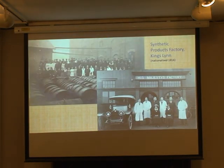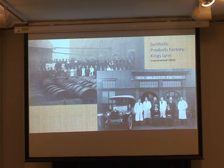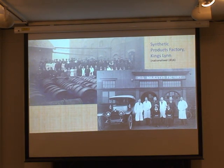Even more significantly, the government took over the Synthetic Products Factory at King's Lynn, so it became one of His Majesty's factories. This is a picture of the staff, and these are barrels of acetone outside it. This factory, which had hitherto been using the Fernbach organism without enough success, was told to start using Weizmann's process, and that was considerably more significant in terms of actually being able to produce acetone.